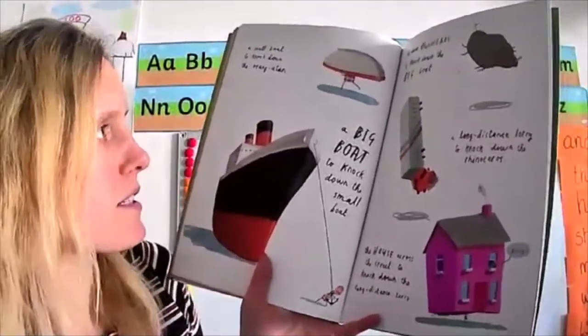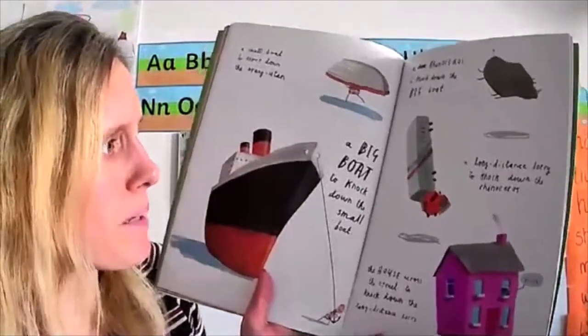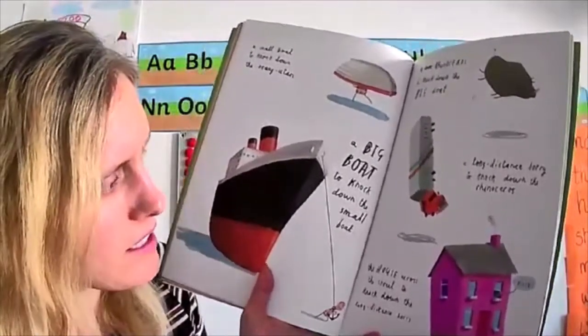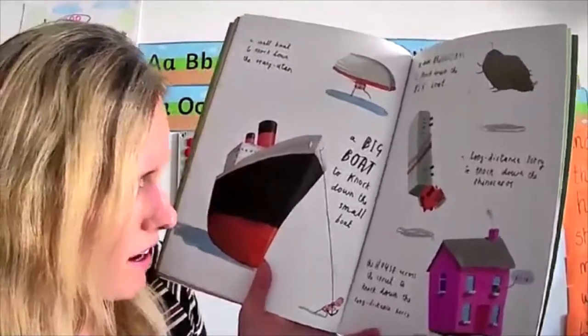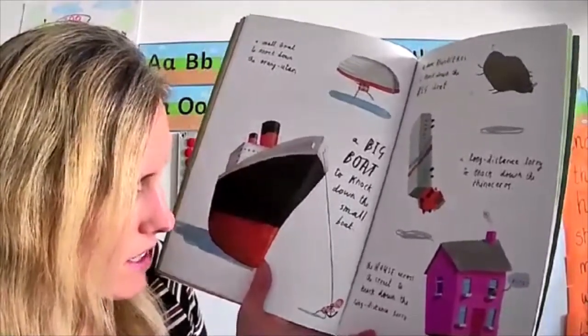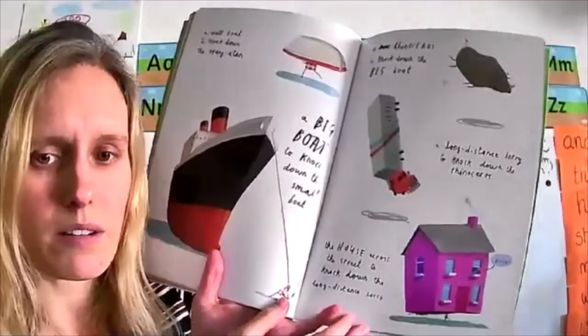A rhinoceros to knock down the big boat. A long distance lorry to knock down the rhinoceros. The house across the street to knock down the long distance lorry.